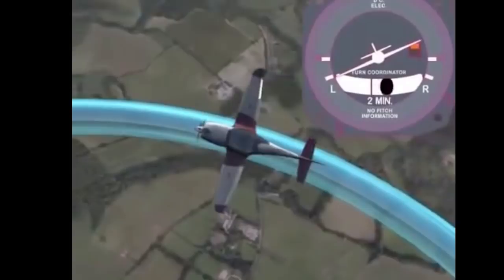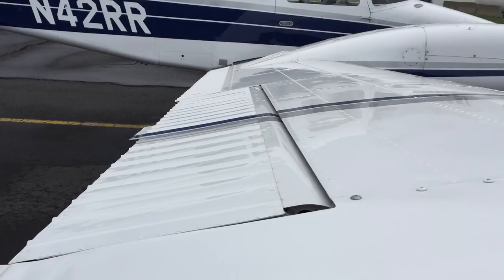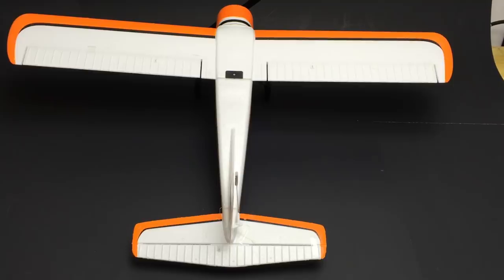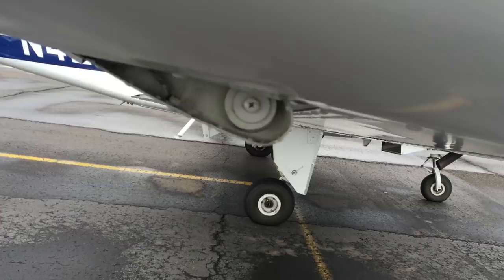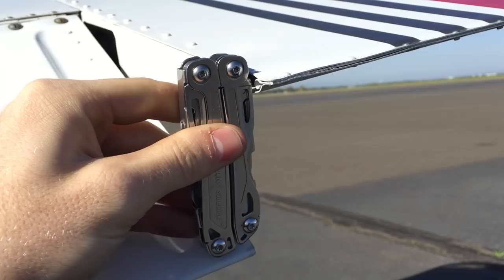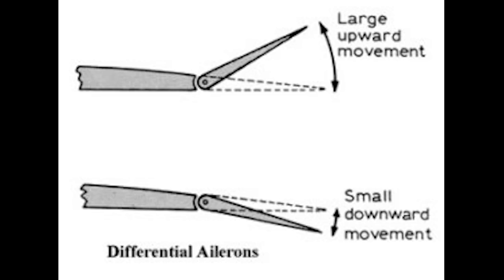There are a couple of different things aircraft designers can use to try and reduce the effects of adverse yaw. Some airplanes actually mix in a little bit of rudder with the aileron usage, and some airplanes like this Beechcraft Duchess use Frise-type ailerons. This is where when one aileron goes up, the leading edge of that aileron dips down into the airflow to cause extra drag, hopefully countering the induced drag on the other side. Some airplanes, like this Piper Arrow, use differential ailerons, where the up-going aileron travels farther than the downward one. And some of the bigger, more complicated airplanes use roll spoilers.